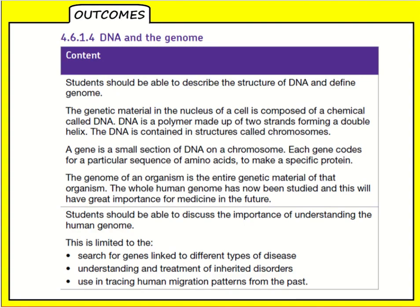In trilogy, you need to be able to describe the structure and say that the genetic material in the nucleus of a cell is made of DNA, and that it's a polymer made up of two strands forming a double helix. You don't need to know it in as much detail as triple.